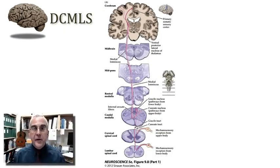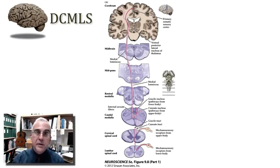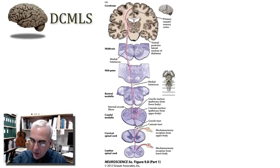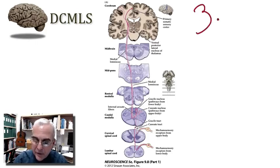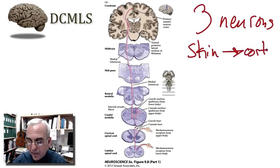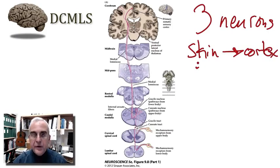We have a view of the entire pathway taken from our companion textbook, which may appear quite small on your screen. Let me give you the broad overview of this pathway and then we'll look at more magnified views. This pathway for mechanosensation involves three neurons as we go from skin to cortex. I want you to focus on these three neurons.